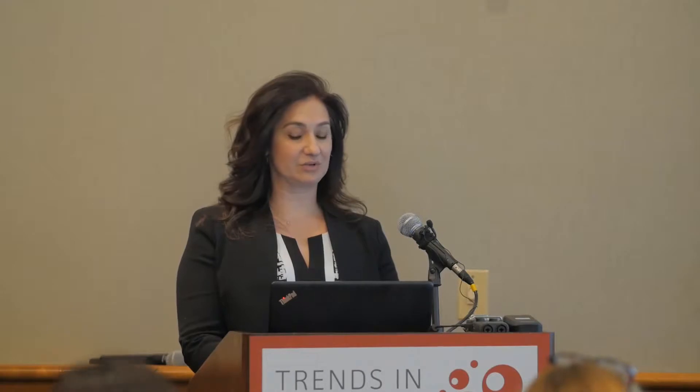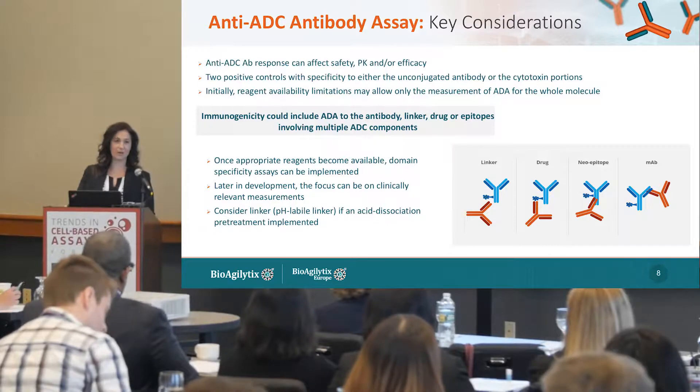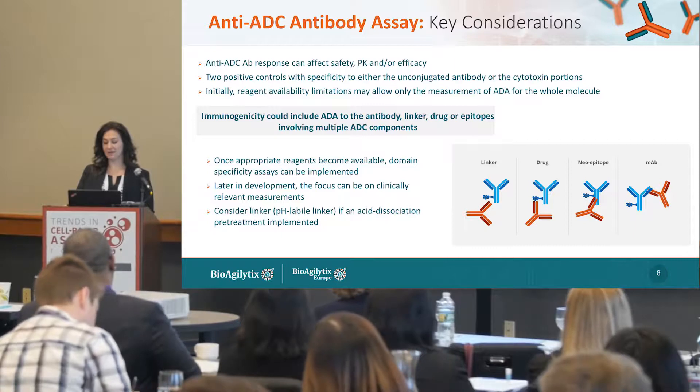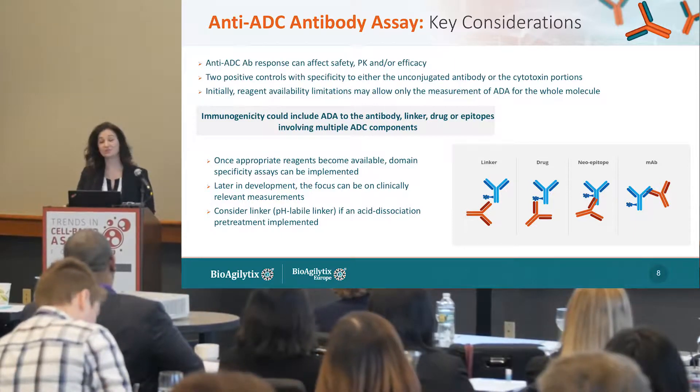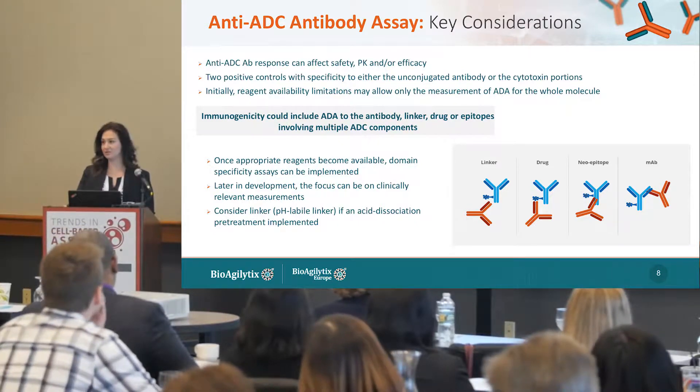When assessing immunogenicity, specialized reagents are needed. Typically, two positive controls with specificity to either the unconjugated antibody or the cytotoxic portions of the ADC are required. Samples may also contain high concentrations of drug, which could interfere with standard immunogenicity assessments. Acid dissociation can sometimes be used; however, a very thorough understanding of the linker chemistry is needed because many linkers are pH labile.